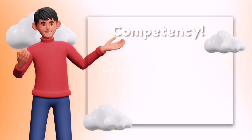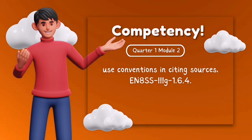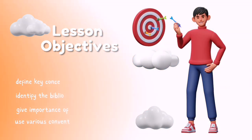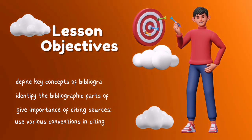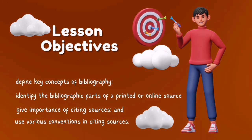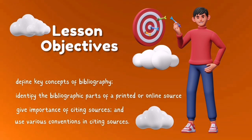Our module competency says: use conventions in citing sources. Our lesson objectives are, as a learner of this module, you are expected to: one, define key concepts of bibliography; two, identify the bibliographic parts of a printed or online source; three, give importance of citing sources; and four, use various conventions in citing sources.